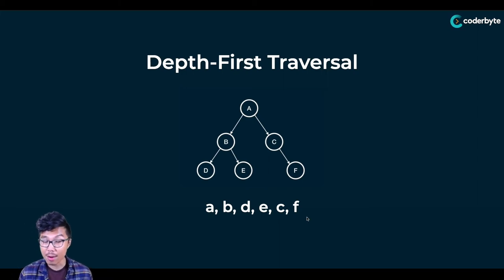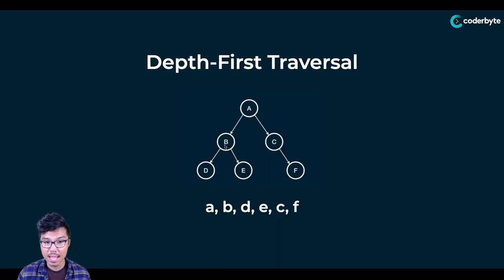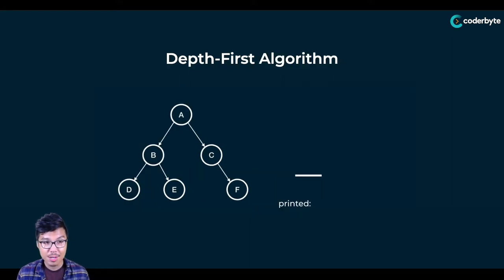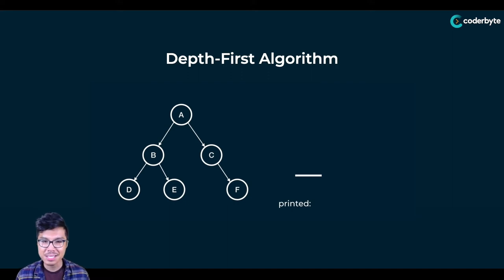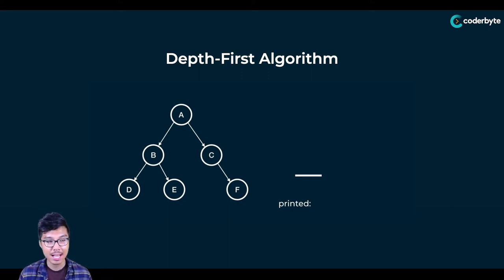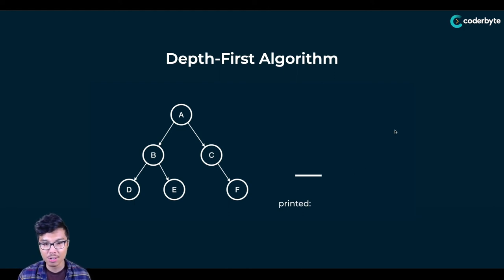Recall that the breadth first traversal of the same tree would give you A, B, C, D, E, F. Now that we know the general pattern for depth first traversal, let's figure out how to implement it. A breadth first algorithm used a queue under the hood; similarly, a depth first algorithm is going to require a stack.